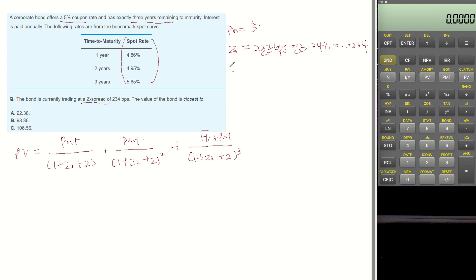Year 1 spot rate is 0.0486, year 2 spot rate is 0.0495, and year 3 spot rate is 0.0565. So let's plug in the numbers. Present value of the bond...